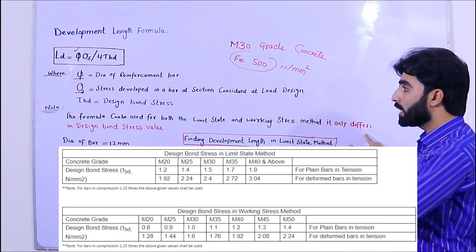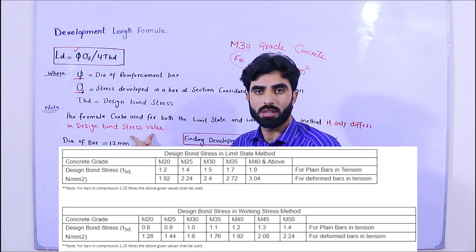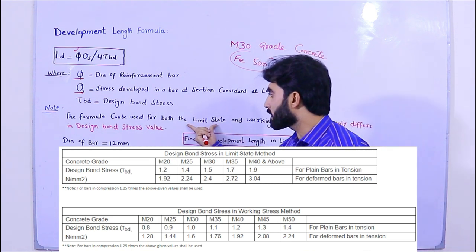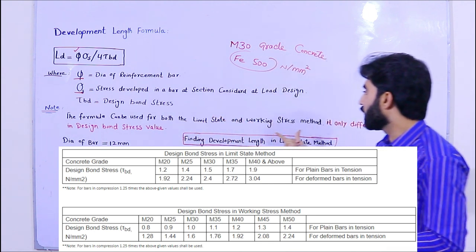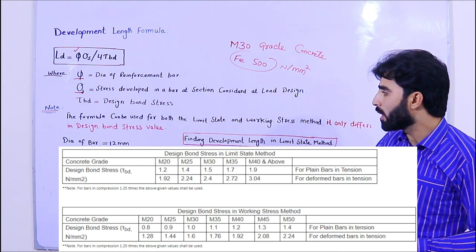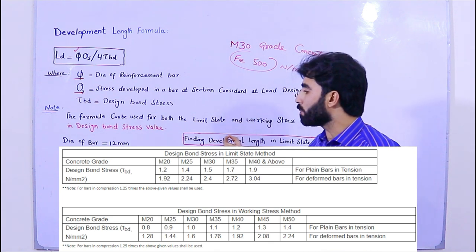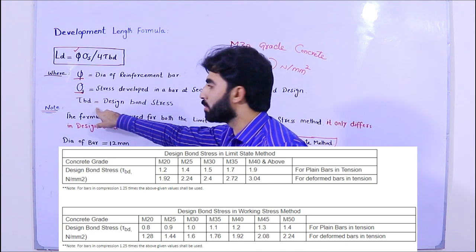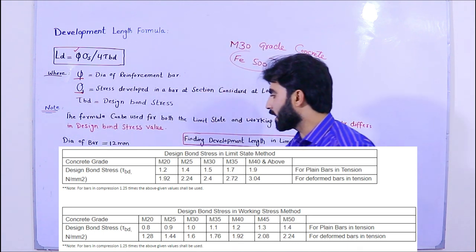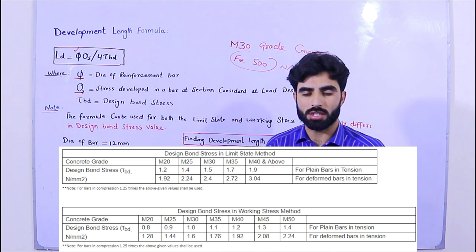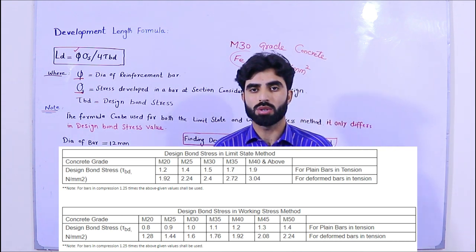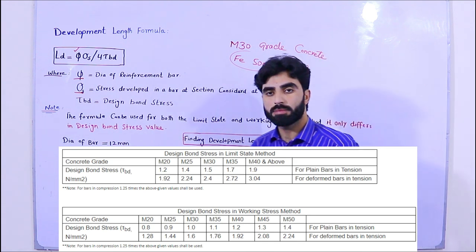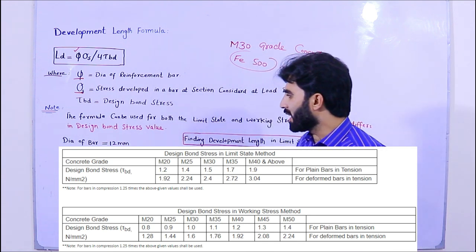If you know about structural design, you should have knowledge about the limit state method and the working stress method. We have different values, especially for design bond stress τbd. You can see on the screen — these are the values you can use for the limit state method and also for the working stress method.